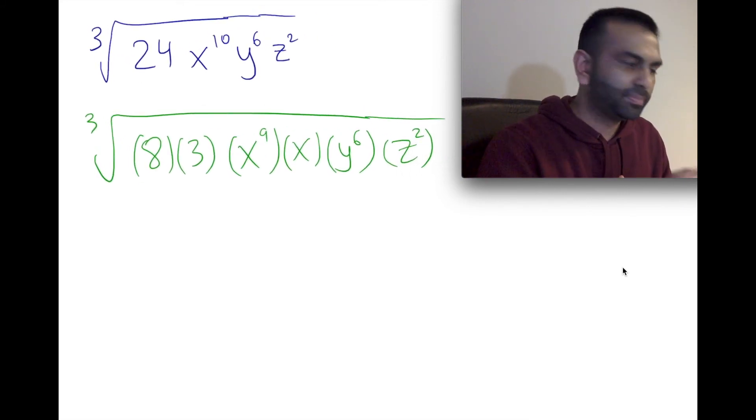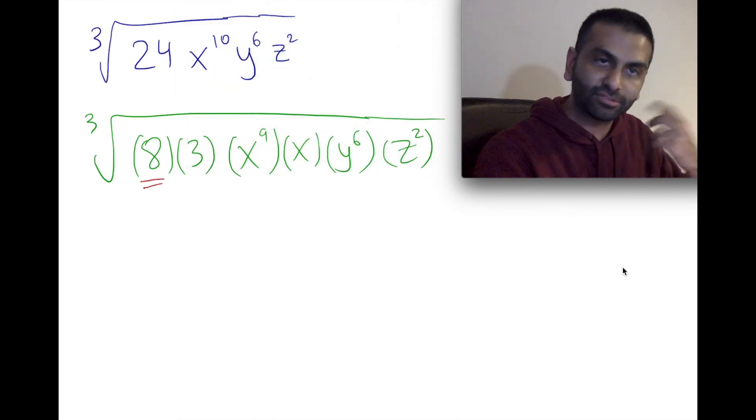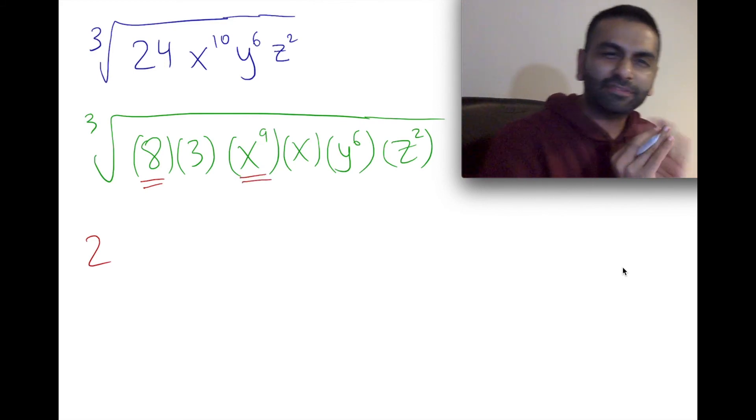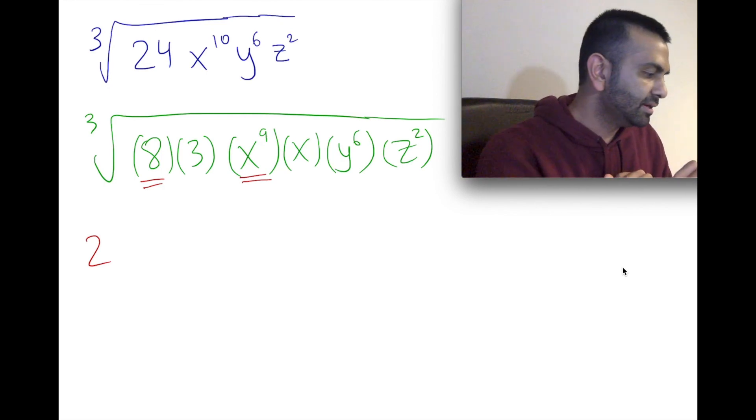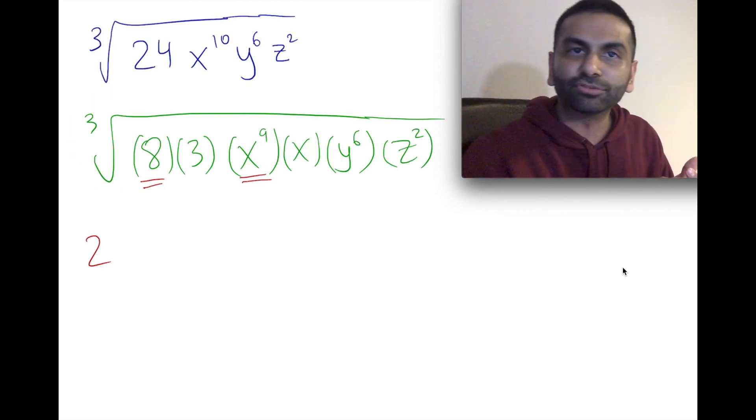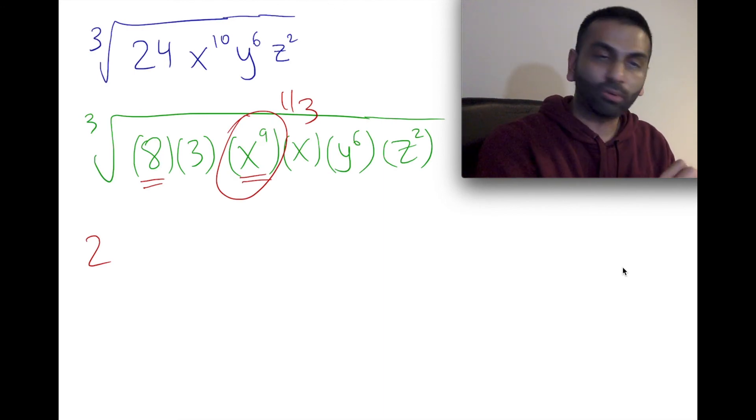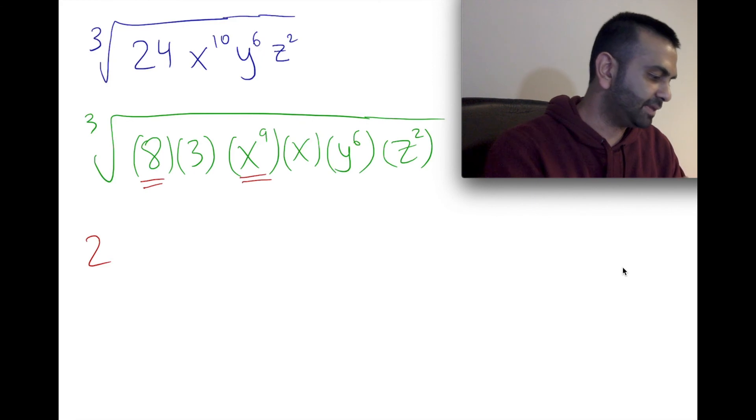So looking at that, we could then pull out this 8, which comes out as a 2, because 2 cubed is there. So we're pulling out the 2. We're pulling out this. Now, if that was a little bit confusing about how they work with the variables, think about it this way. The cube root is really something to the one-third power. So x to the ninth to the one-third power, which is what we're doing here, is going to be 9 times one-third, which is 3. So that's just going to be x cubed over here.